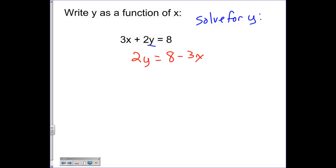And then I need to divide by 2 on both sides. I could divide the whole thing out, but I am going to simplify. This becomes a 1, that's a y. 8 over 2 is 4 minus 3 halves x.